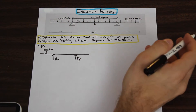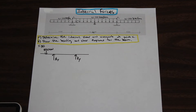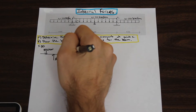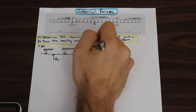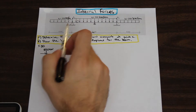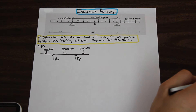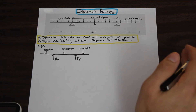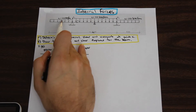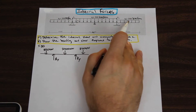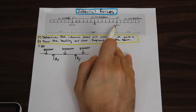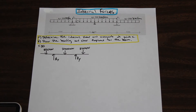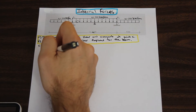This is a symmetrical beam, so there are a lot of shortcuts we can take. Because the loadings are the same on both sides, if we find the concentrated load on one side it will be the same on the other. The same applies to the reactions — BY will be exactly the same as AY. This will save you a lot of time on the test. If the professor puts a symmetrical beam like this, you can immediately use that trick.